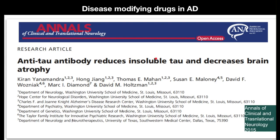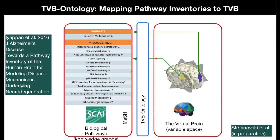A third approach targeting tau protein — tau antibody trials — also did not lead to success, with no positive outcomes reported. The challenge is to really identify the causal mechanisms of Alzheimer's disease. Clinical trials are extremely expensive, and only if there is profound evidence for underlying mechanisms does it make sense to start another trial. This is where multiscale computational modeling can contribute to the identification of such candidate mechanisms.